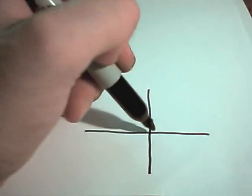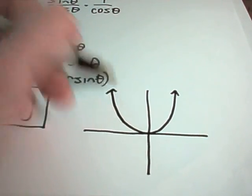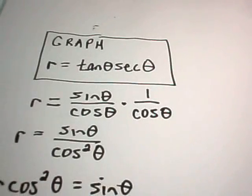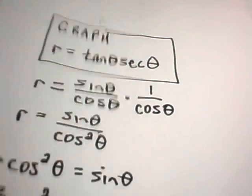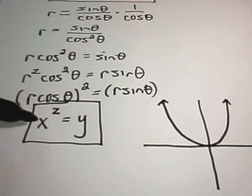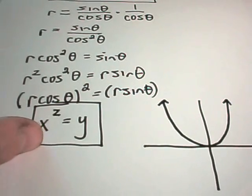So now we've got an equation for our graph in Cartesian coordinates. And we know what y equals x squared looks like. That's just going to be a parabola opening upwards. So kind of interesting that you can go from this polar form back into a more recognizable Cartesian form, just kind of using those relationships.